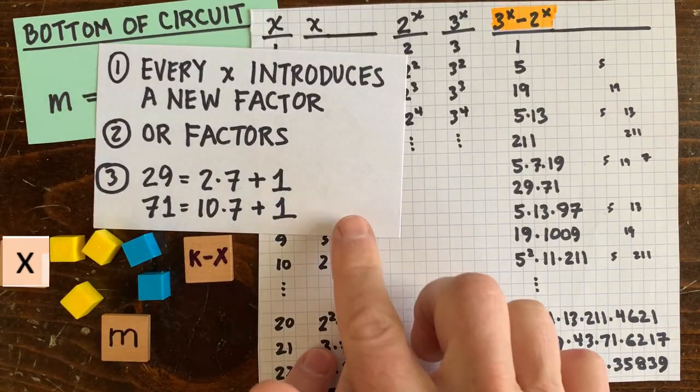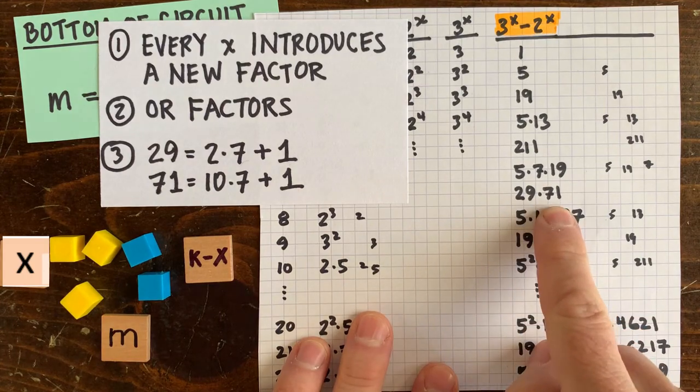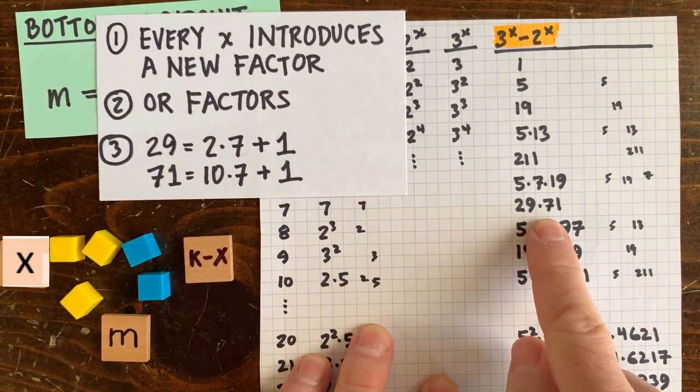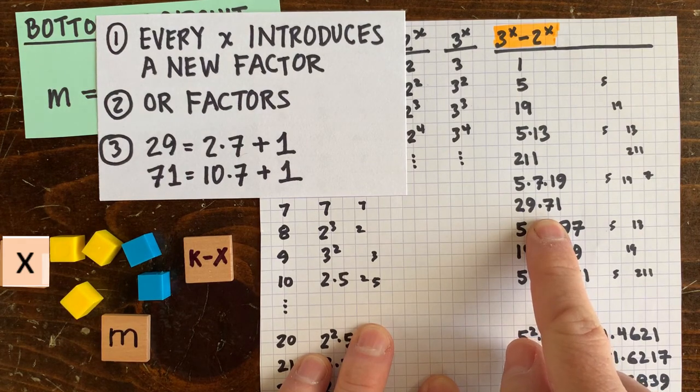sometimes a newly introduced factor is composite, not prime. For example, x equals 7 introduces two new factors simultaneously, 29 and 71.